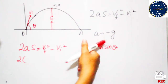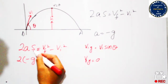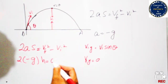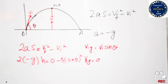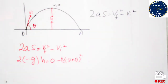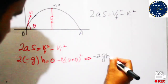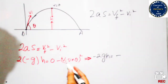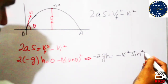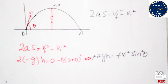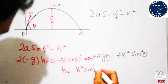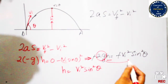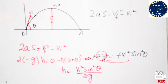Acceleration is due to gravity, minus g. S is height, and Vf² is 0 minus Vi² — that is, Vi sine theta whole squared. So we get: minus 2g·H = minus Vi² sin²theta. The minus signs cancel on both sides, and the height becomes H = Vi² sin²theta / 2g. This is the height of projectile motion.